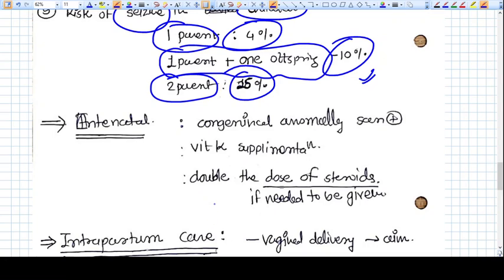Antenatal management. We should be very cautious, very vigilant about the congenital anomalies. All the things that are available to check any anomaly in the baby should be done, like serial USG scans, 20 weeks target scans, NIPTs, double marker, triple marker, all those tests which give you any anomaly risk should be done. Vitamin K supplementation should also be done.